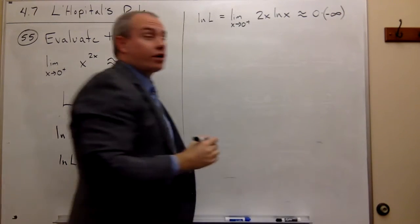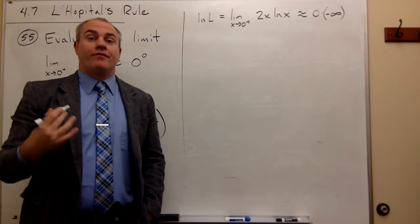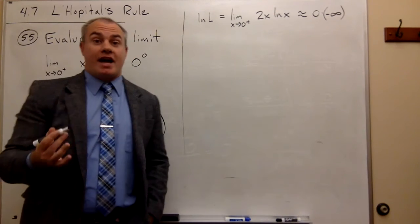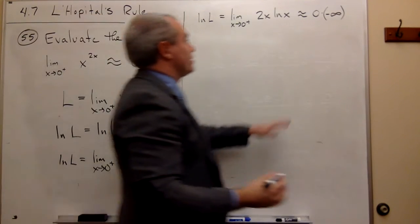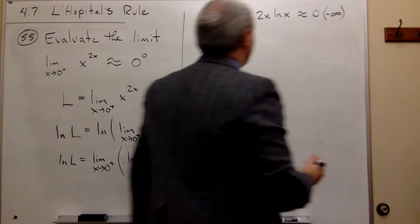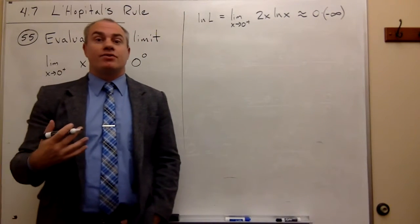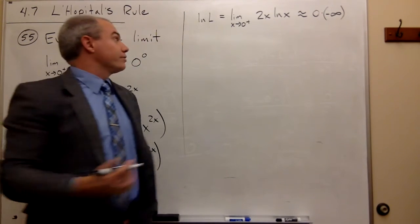So this is an indeterminate form, but not one of the indeterminate forms that I'm really happy to have. This is a zero times infinity. So I need to mess with it a little bit to get it into a form where I can actually use L'Hôpital's rule.